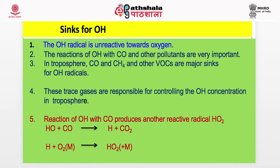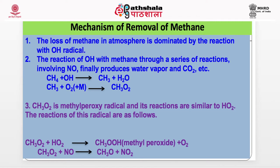How is OH removed from the atmosphere? Remember, in the atmosphere, anything which is formed has a source and also has a sink — a removal mechanism. OH radicals do not react with oxygen, do not react with nitrogen, and do not react with CO2, which are the gases present in the largest amounts. The reactions of OH with CO and other pollutants are very important. CO, CHO, and other VOCs react with OH radicals and remove it — or in other words, this radical removes these pollutants from the atmosphere.